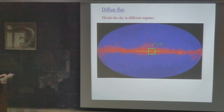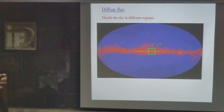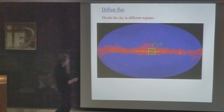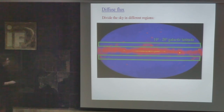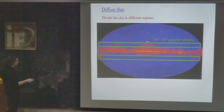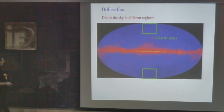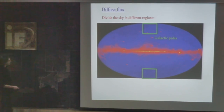Now let me move to the second target: searching for the diffuse flux. Instead of looking at point objects, we are now looking at different regions in our own galaxy. The strategy is to divide the sky into different regions — for instance, a 3×3 degrees box around the galactic center, extended to the galactic bulge between 5 and 30 degrees around the galactic center. One can also exclude the galactic disk to remove backgrounds and search in a band covering all galactic longitudes with latitude between 10 and 20 degrees, and finally look at the galactic poles. The signal is smallest at the poles, but the background is also smallest, so the signal-to-background ratio may actually be largest there.